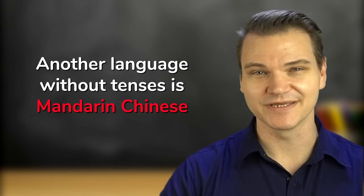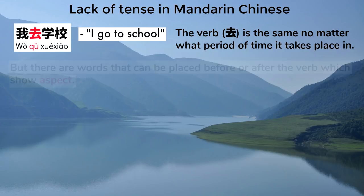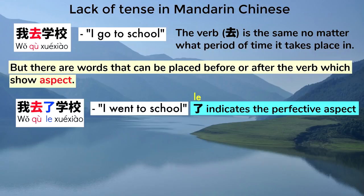The verb is the same no matter what period of time it takes place in. But there are words that can be placed before or after the verb which show aspect. This means I went to school. Indicates the perfective aspect, viewing an action in its entirety, including its completion, at a point in time.